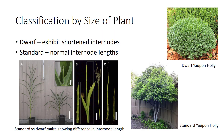The overall size of the plant at maturity is commonly used to classify and name plants. Plants may be dwarf, which exhibit shortened internodes, or they may be standard size with normal internode lengths. You can see the difference in internode length between standard and dwarf maize in the photos. Dwarf plants are also common in the nursery and landscape industry — you may be familiar with the dwarf yaupon holly, but may not have known it comes in a much larger standard version.